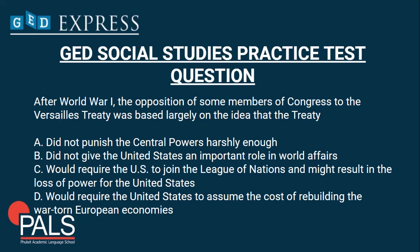After World War One, the opposition of some members of Congress to the Versailles Treaty was based largely on the idea that the treaty: A) did not punish the other Central Powers harshly enough; B) did not give the United States an important role in world affairs; C) would require the U.S. to join the League of Nations and might result in the loss of power of the United States; or D) would require the U.S. to assume the cost of rebuilding the war-torn European economies. I'll give you a few seconds to think about it.